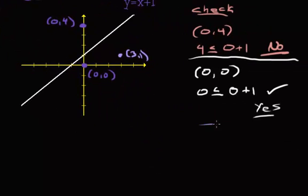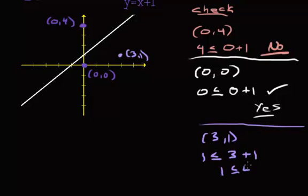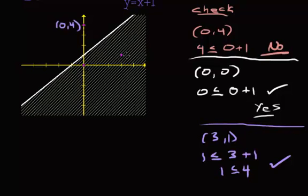Alright, so let's see if that one works. Alright, so y is 1 less than or equal to, x is 3 plus 1. So is 1 less than or equal to 4? Yes. In fact, if you check any point on that side, it's going to work. So let's go ahead and shade this side. Now notice that shading covered up my points, and that's fine. What you're going to do is shade everything below this line, because these are the points that are going to work. So there's our first example. Let's take a look at another one.